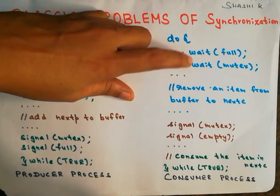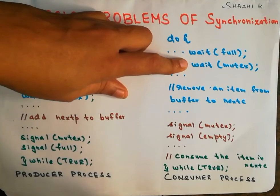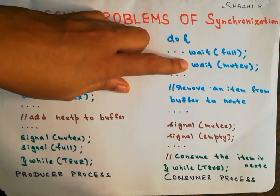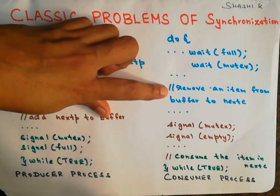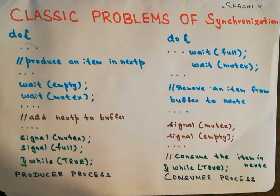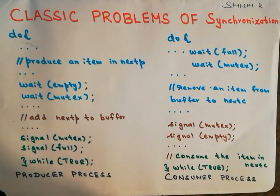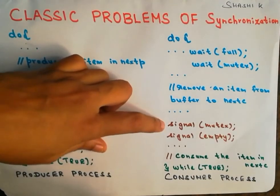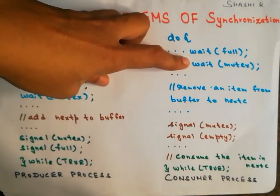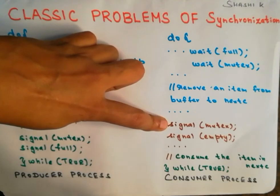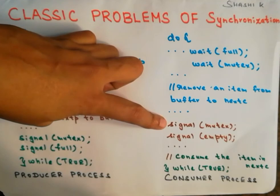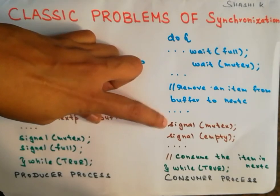Next, the consumer executes the wait operation on the mutex semaphore, since accessing the buffer is a critical section. If mutex is 1, it means the producer is not in the critical section, so the consumer gets hold of the critical section. Once inside, the consumer removes an item from the buffer and stores it in a variable called nextc, which represents the next consumed item. It then executes the signal operation on mutex, setting it back to 1, indicating the consumer has left the critical section.